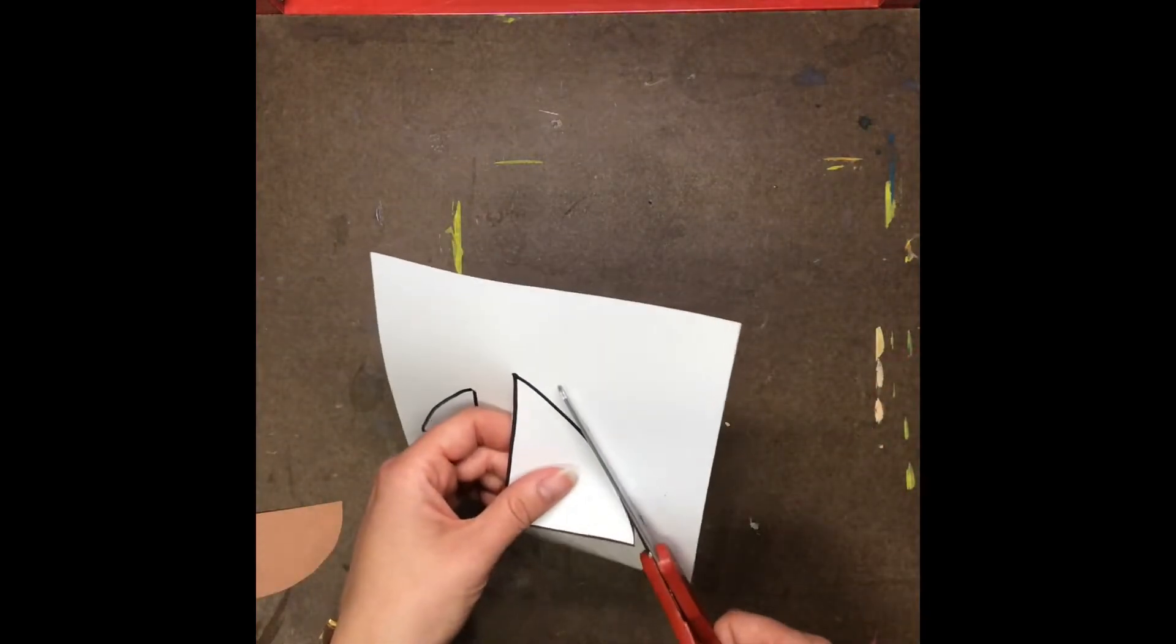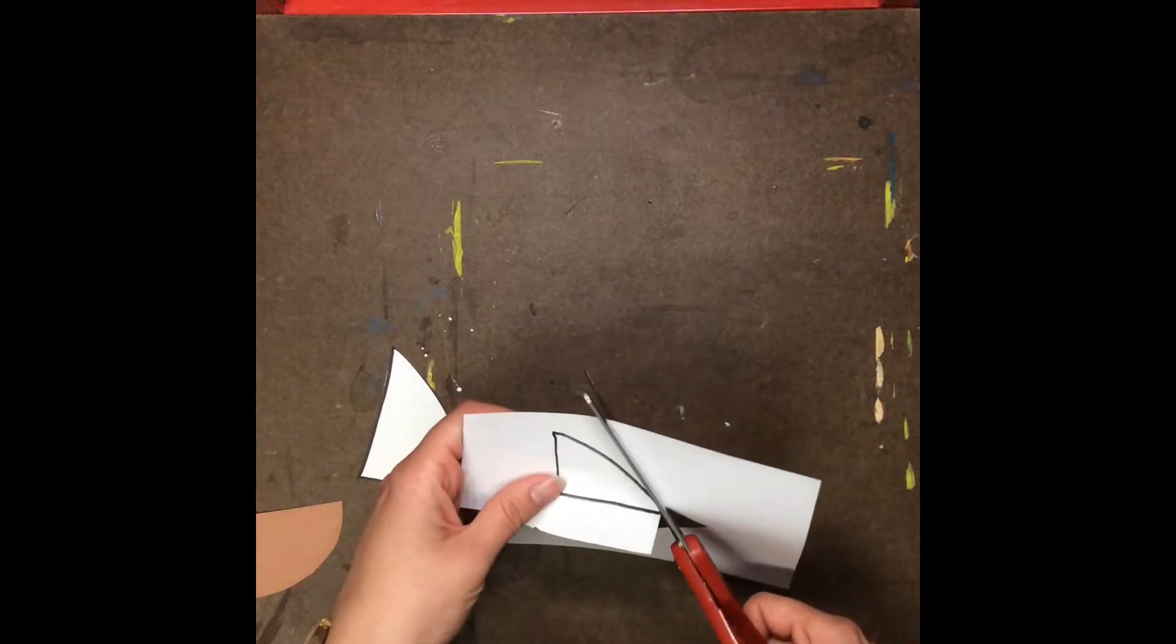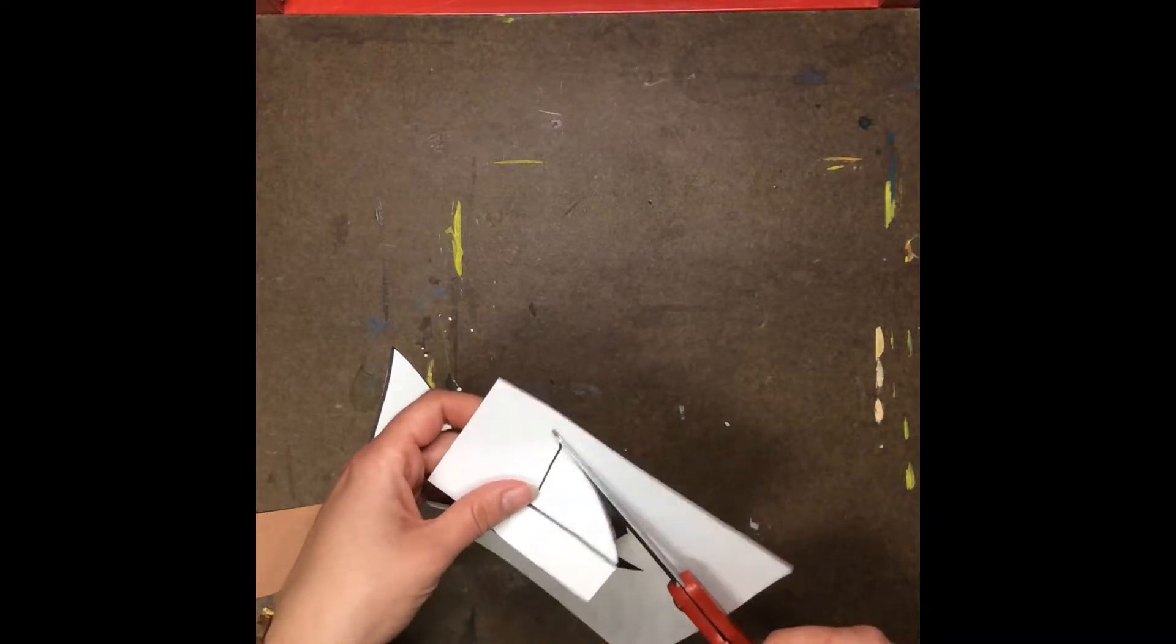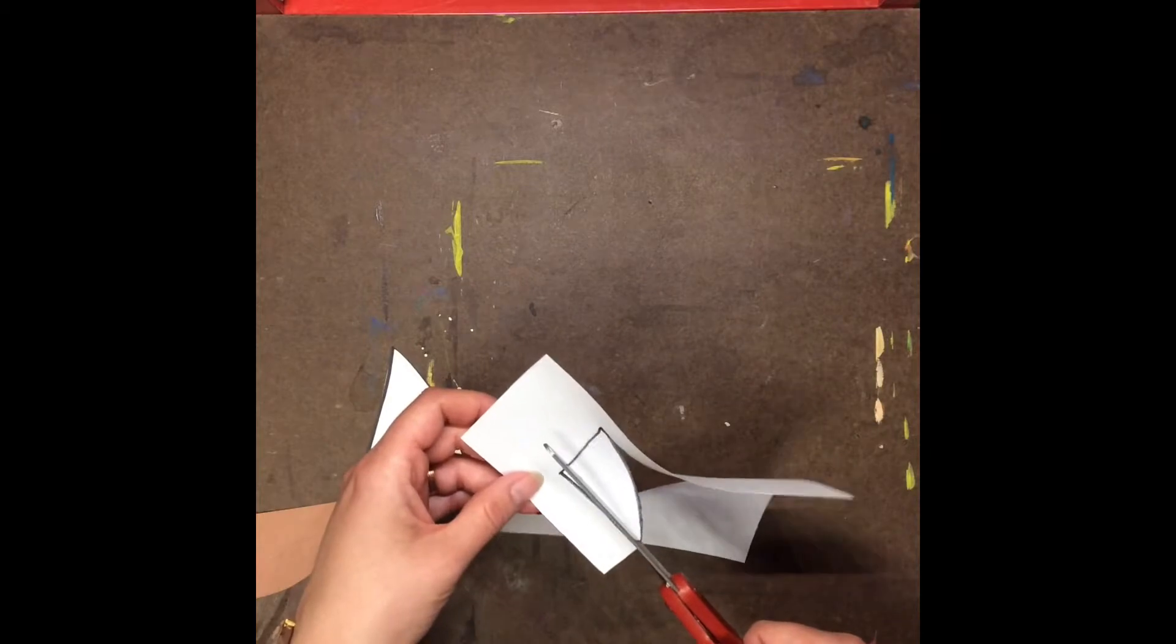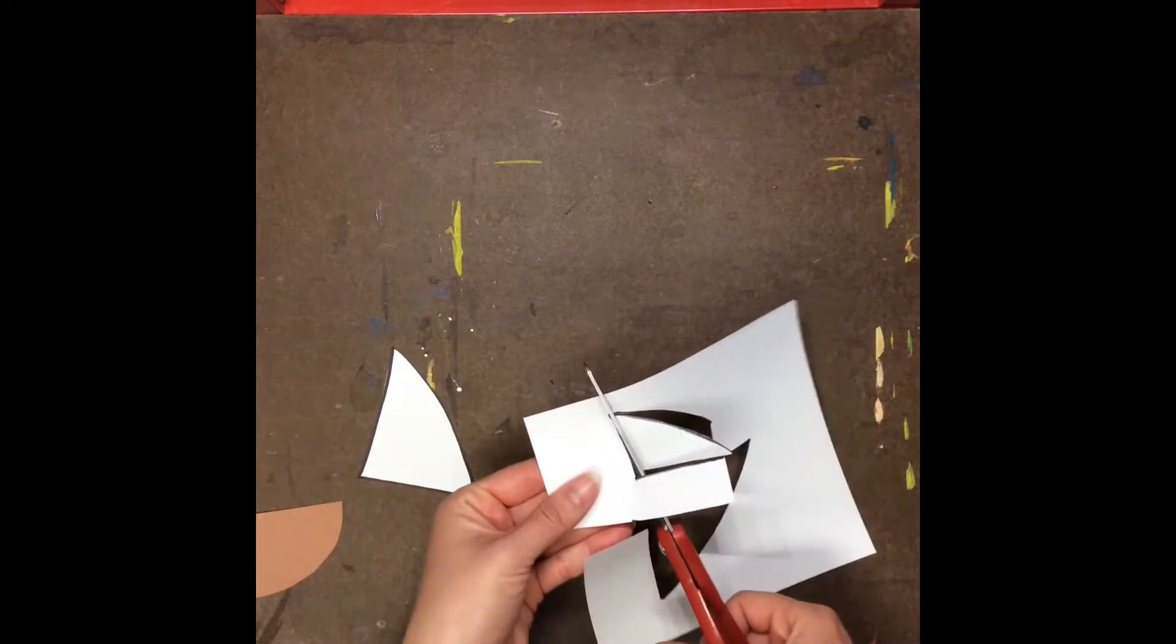And glue all my pieces together. Your boats don't have to look like my boats. If you want to do a different style of boat that is totally fine. If you want to do different looking sails that's okay.